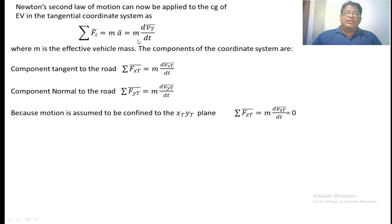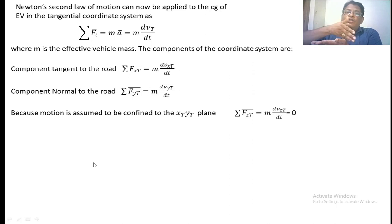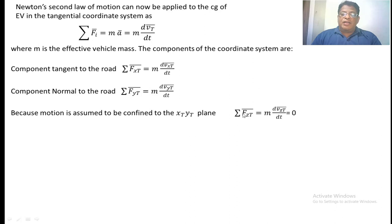Where m is the effective mass of the vehicle. The component tangent to the road is: sigma Fxt-bar equals m d(vxt-bar)/dt. The component normal to the road is: sigma Fyt-bar equals m d(vyt-bar)/dt. Since all forces act only in the xf and yf plane, there is no force acting on the z axis. Therefore, sigma F-bar of zt equals m d(vzt-bar)/dt equals zero.